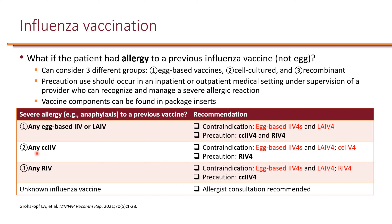For the second group — allergy to a cell-cultured inactivated influenza vaccine — any egg-based as well as cell-cultured vaccines are contraindicated. However, they may cautiously receive recombinant influenza vaccine. For the last group — history of allergy to recombinant — egg-based and recombinant influenza vaccines are contraindicated, but they may cautiously receive cell-cultured influenza vaccine. If it is unknown which vaccine caused the reaction, an allergist can be consulted.